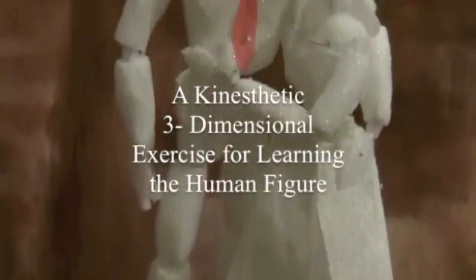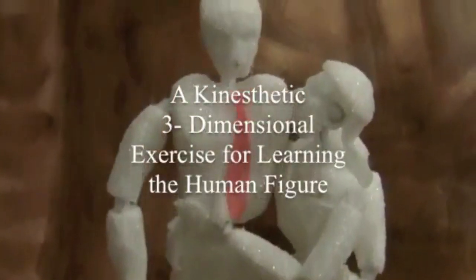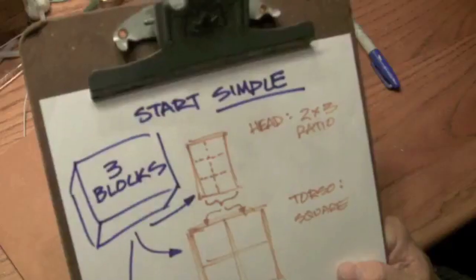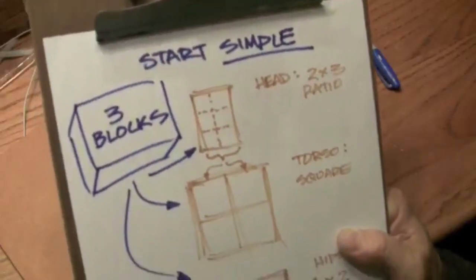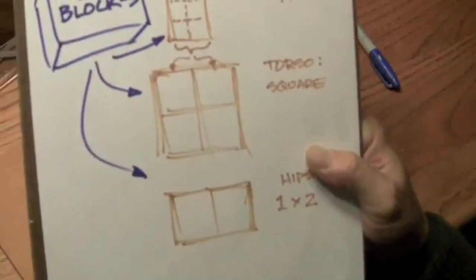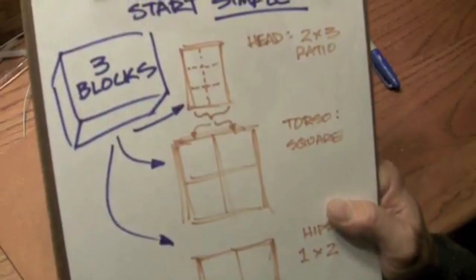Hi, this is Dan Nelson and I want to teach you how to draw the human figure not by drawing something, but by creating a three-dimensional model. The overriding principle is start simple. I've divided the human figure into three essential blocks: a head, a two-by-three ratio, the chest, two by two square, the hips, one by two rectangle viewed from the front.